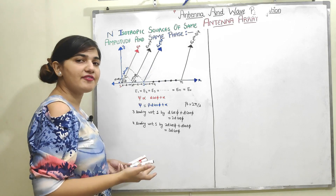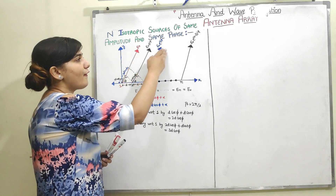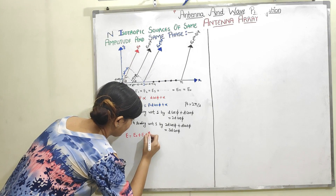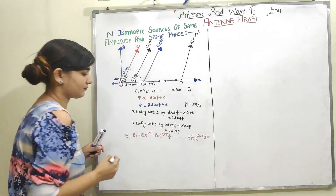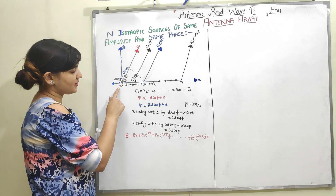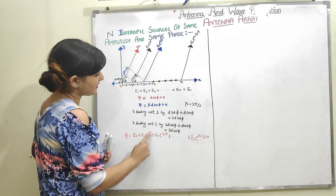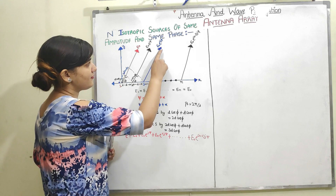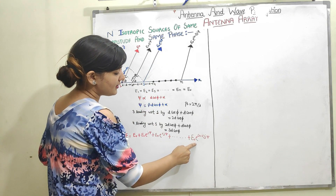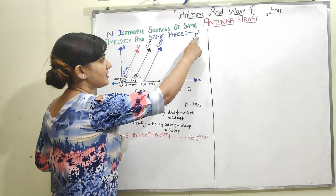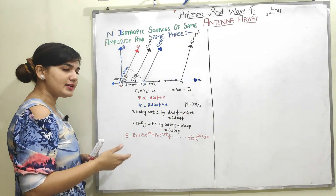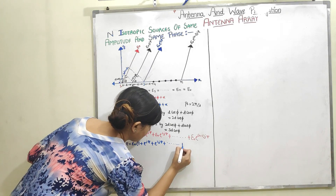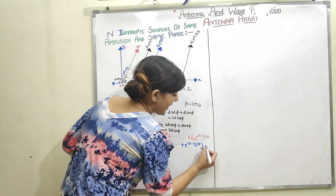Now to find the final electric field at point P, I add all these electric fields. The total electric field E equals E0 + E0·e^(j·psi) + E0·e^(j·2·psi) + ... + E0·e^(j·(N-1)·psi). Taking E0 common, I call this equation 1.